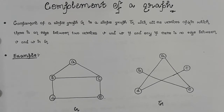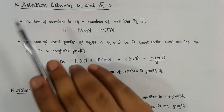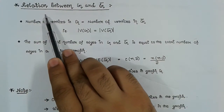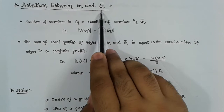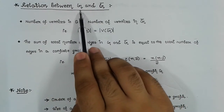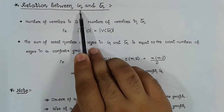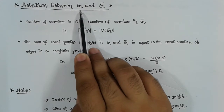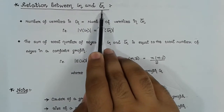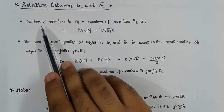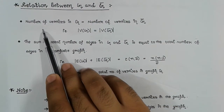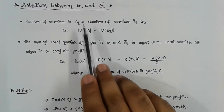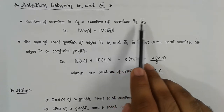This is what the complement of a graph is and how to take the complement of any given simple graph G. Now let us see the relation that exists between G and G-bar. The first relation is between the number of vertices in G and G-bar, which states: the number of vertices in G equals the number of vertices in G-bar.